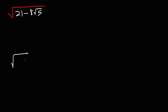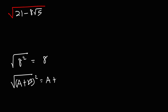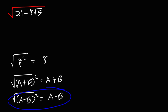The square root of 8 squared is 8. In order to simplify this, it needs to be in the right form. The square root of (a + b) squared is going to be a plus b, and the square root of (a - b) squared is going to be a minus b. We need to check to see if we have a situation like this in this problem.